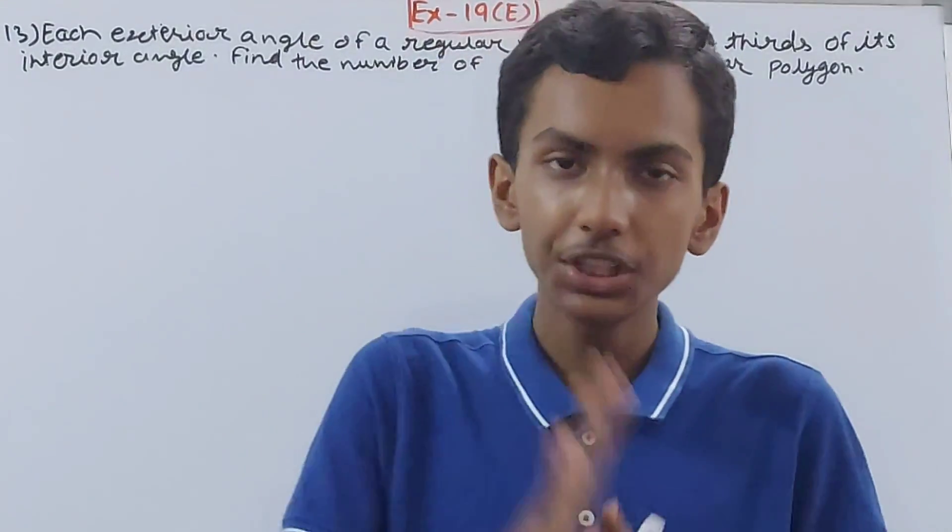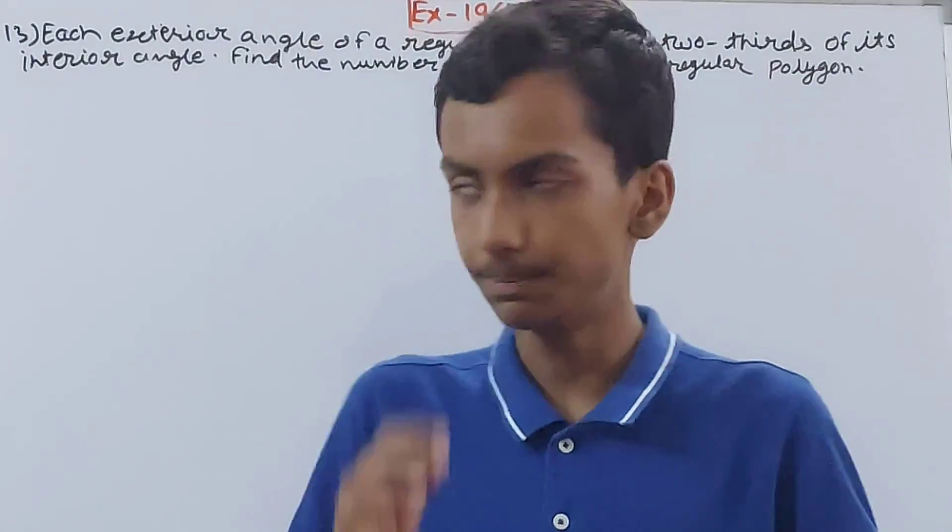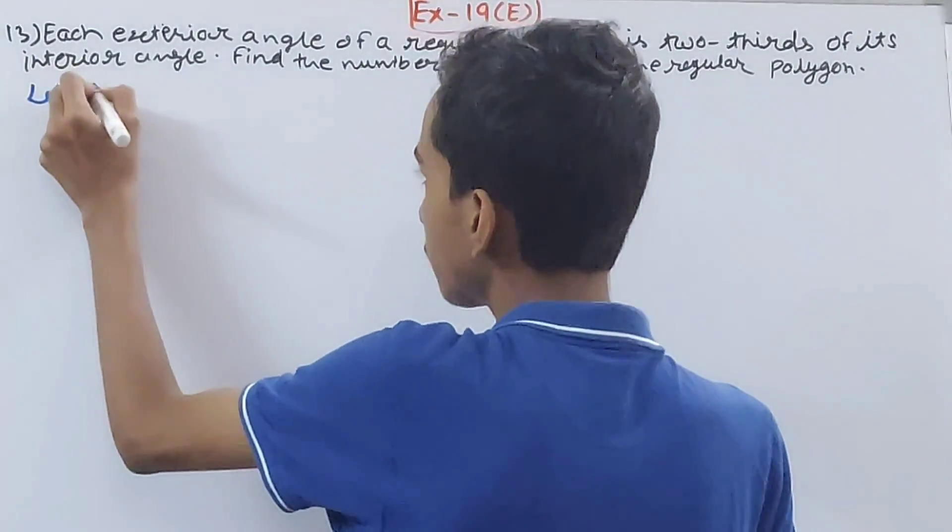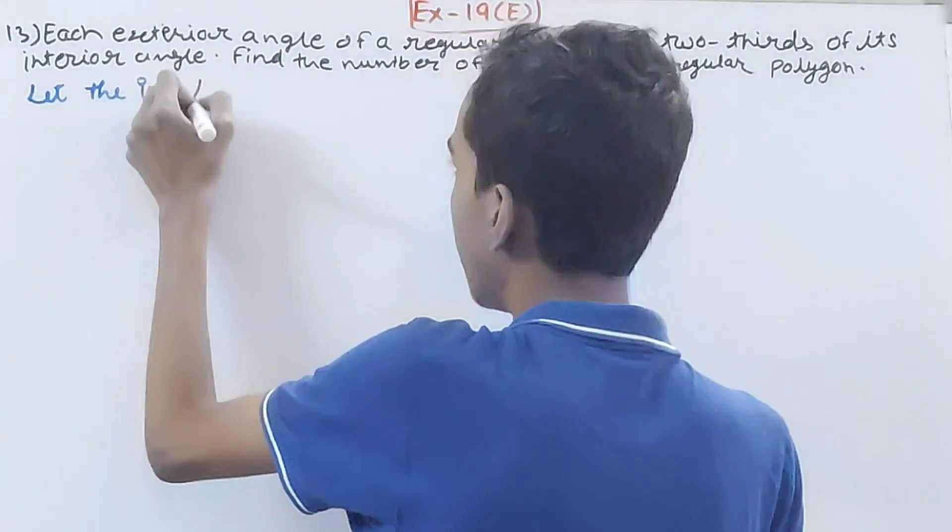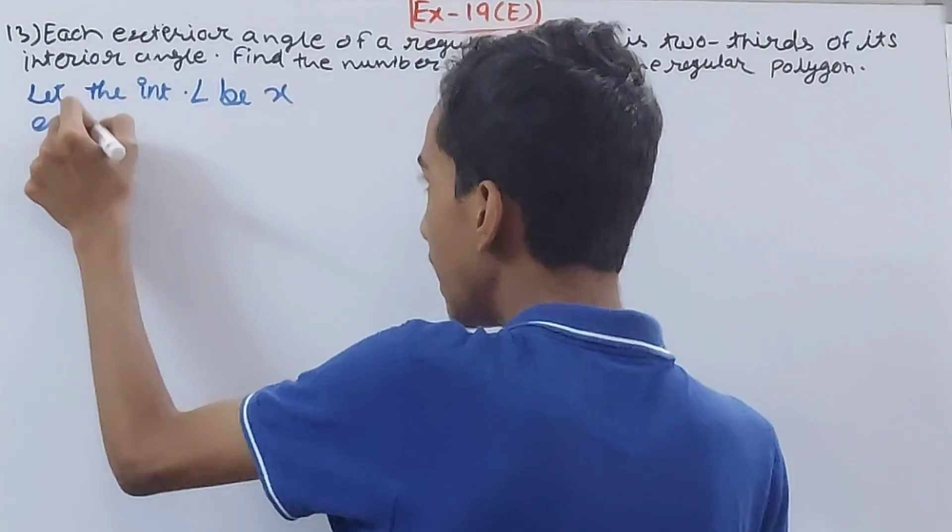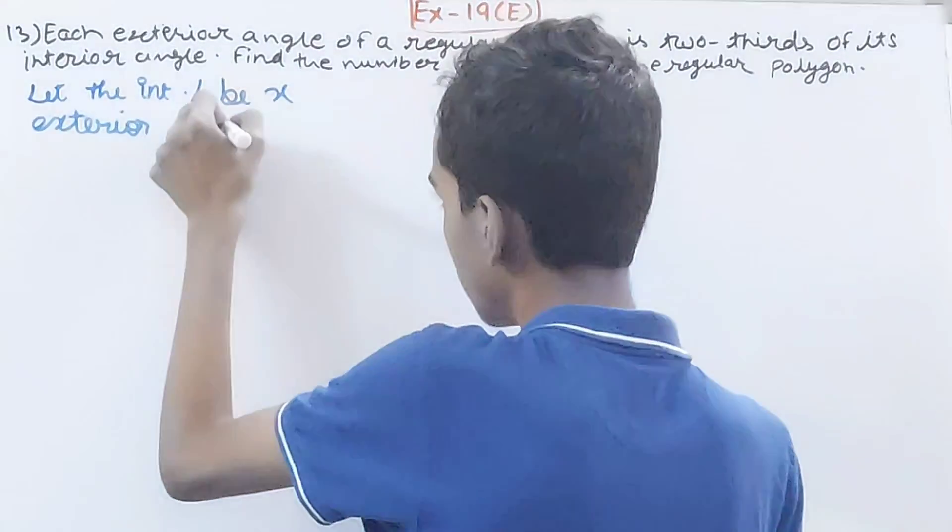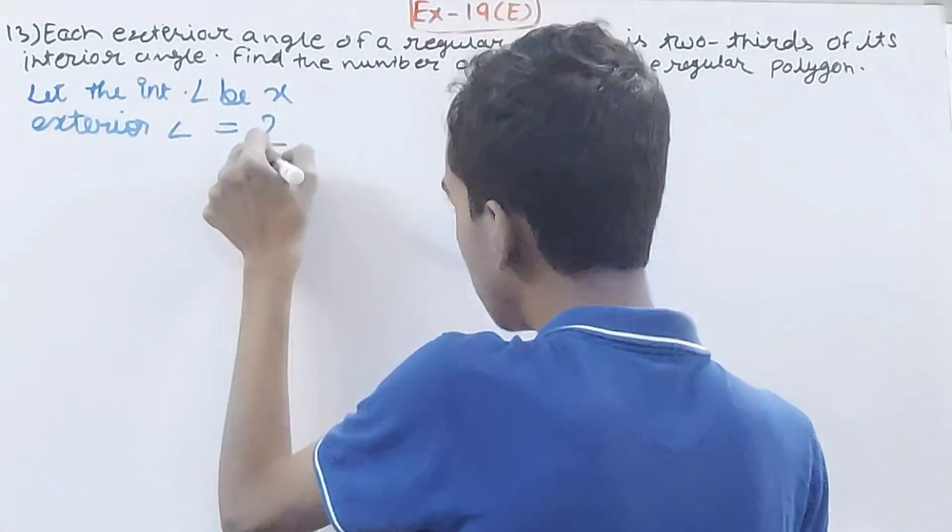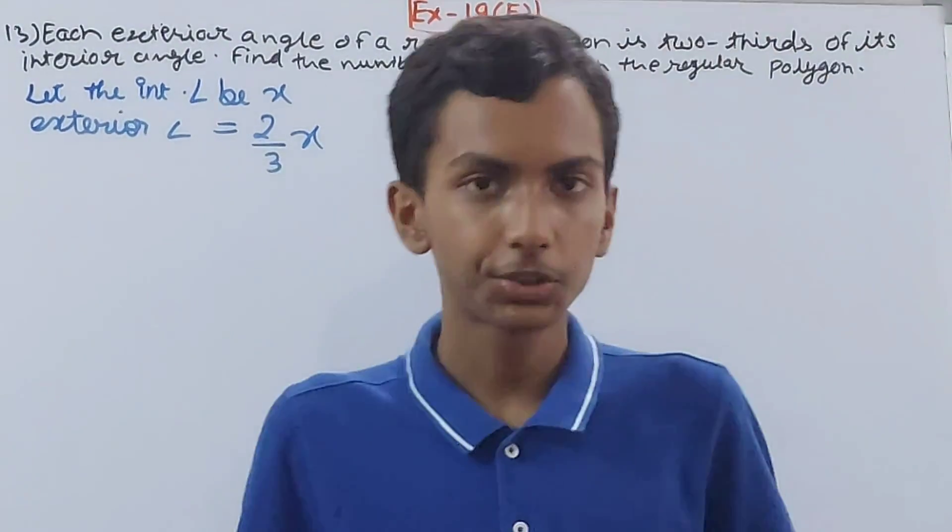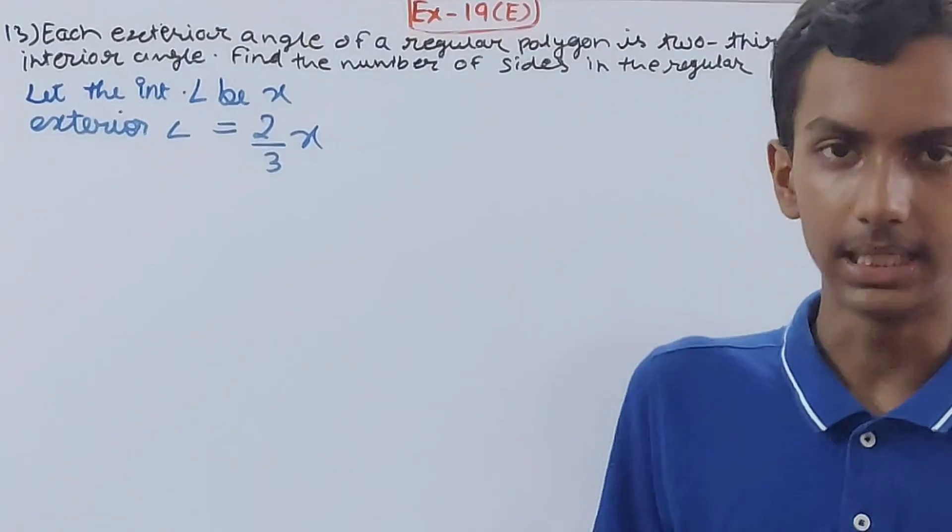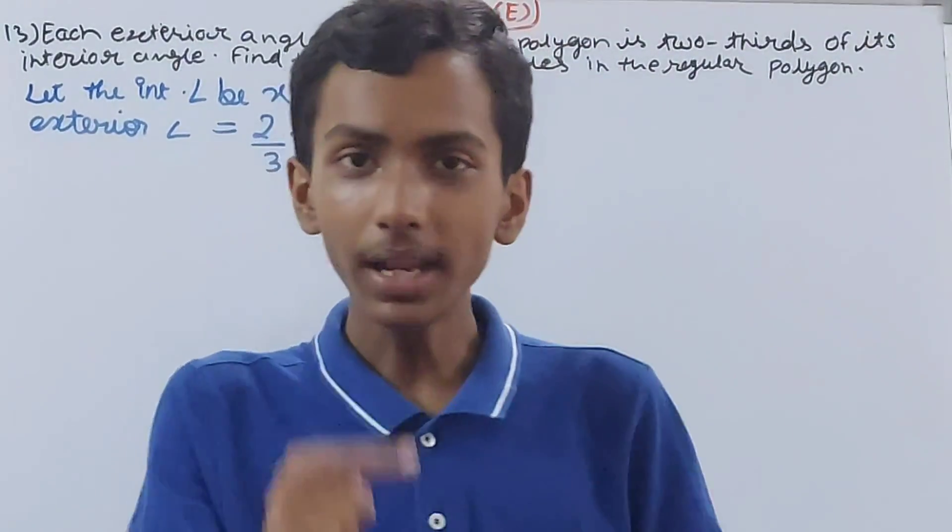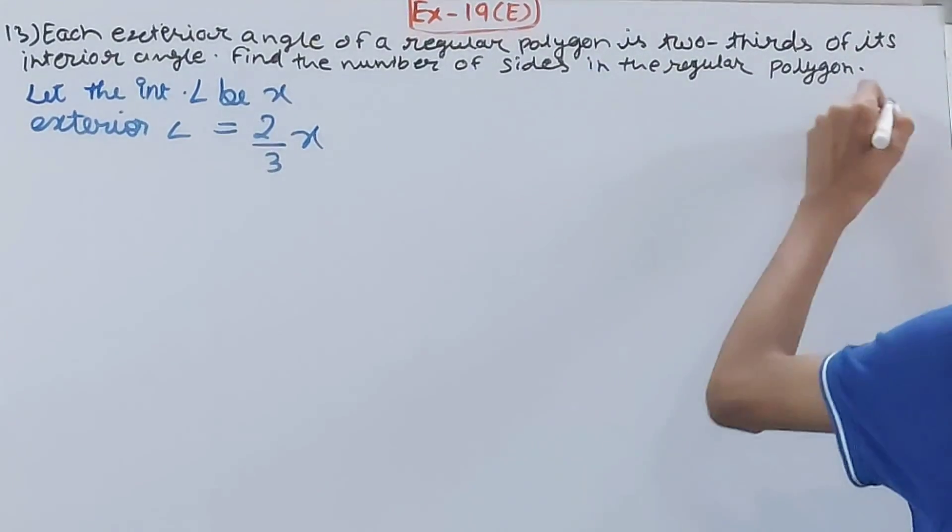Basically, they are saying the exterior angle is two-thirds of its interior angle. Let the interior angle be x. So the exterior angle will be two-thirds of this, which is 2/3 x. They have asked us the number of sides in the regular polygon.